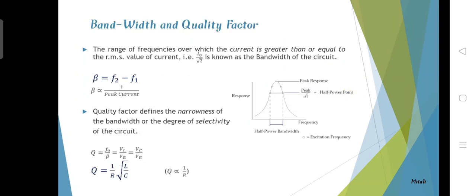The bandwidth and the quality factor. The range of frequencies over which the current is greater than or equal to the RMS value of current, that is I0 by root 2, is known as the bandwidth of the circuit. Bandwidth is represented here by beta which equals F2 minus F1, the difference in frequencies between the peak response. The quality factor defines the narrowness of the bandwidth or the degree of selectivity of the circuit. The formula for quality factor is Q equals 1 by R under root LC.